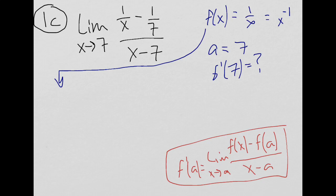which gives me f prime of x equals negative 1 times x to the negative 2, which I'm going to rewrite as negative 1 over x squared. And now, I'm looking for f prime of 7, so I'm just going to plug 7 into this.